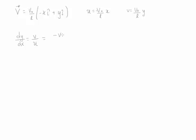We have positive v0 y over l divided by negative v0 x divided by l. Notice that v0 and v0 cancel and l cancels. Therefore this becomes simply negative y divided by x. So we rewrite this as dy/dx is equal to negative y divided by x.